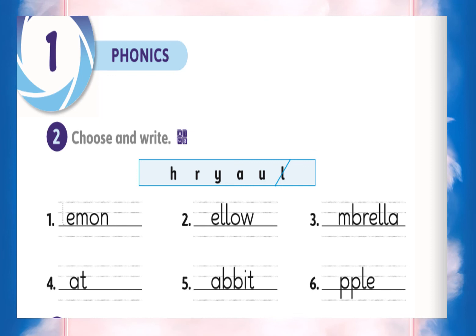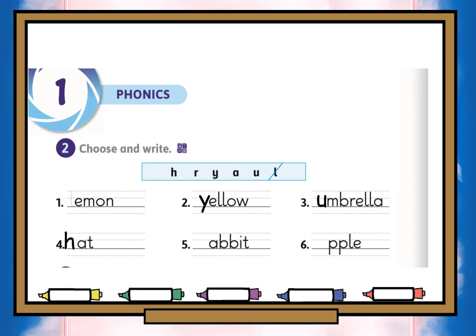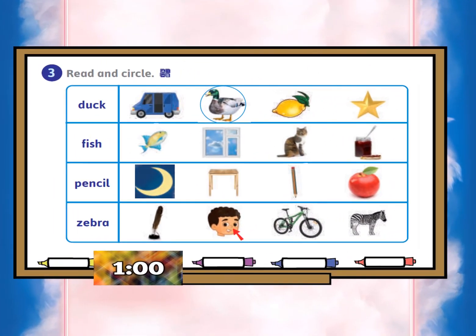Then we come to the phonics. Choose the right letter — write the initial letter of each word. Number one: lemon — L. Number two: yellow — Y. Number three: umbrella — U. Number four: hat — H. Number five: rabbit. Number six: apple. Then underline and circle the right picture: number one — desk, number two — fish, number three — pencil, number four — zebra.